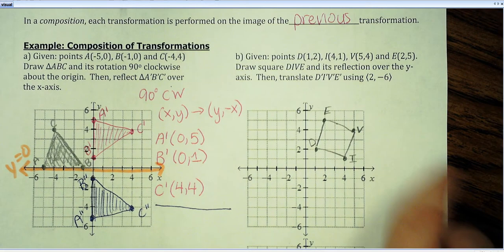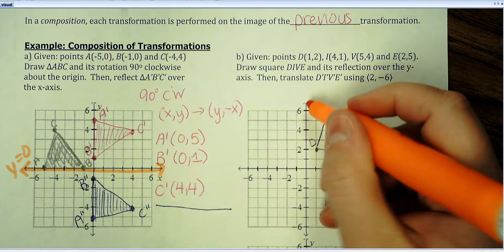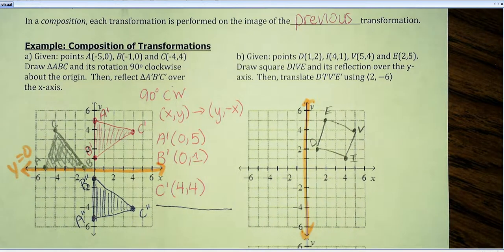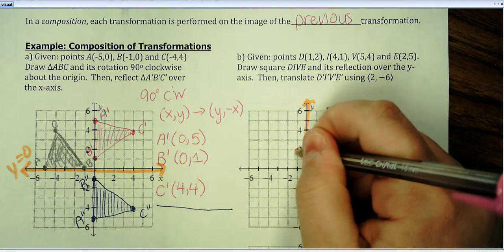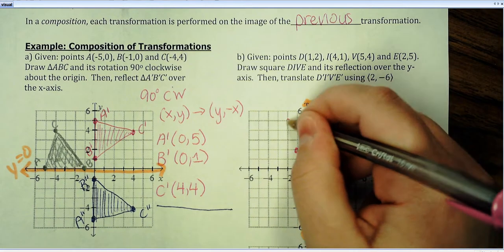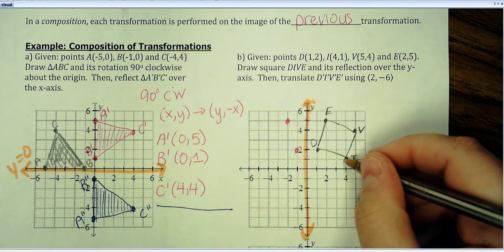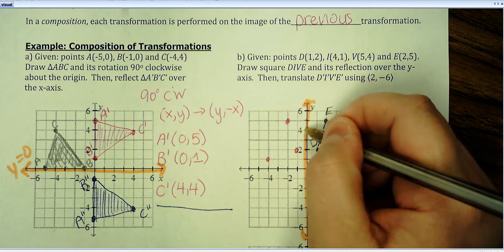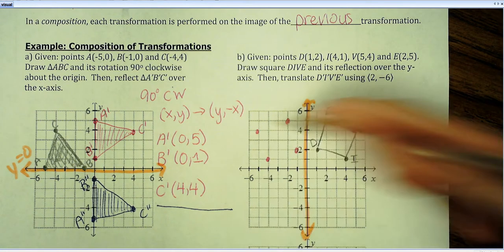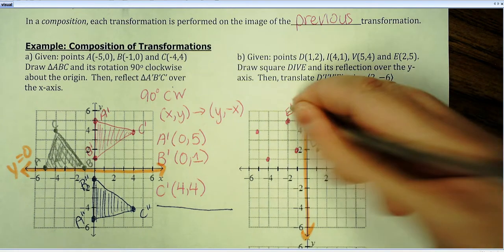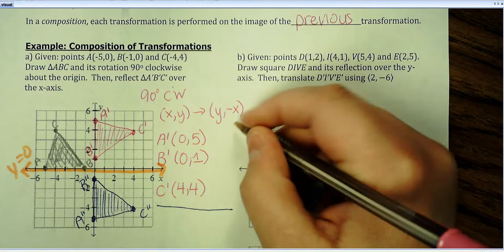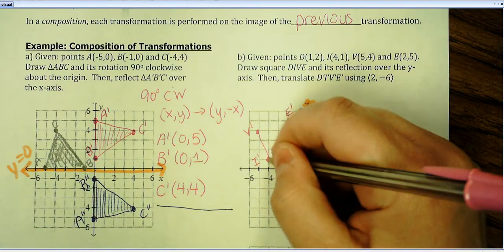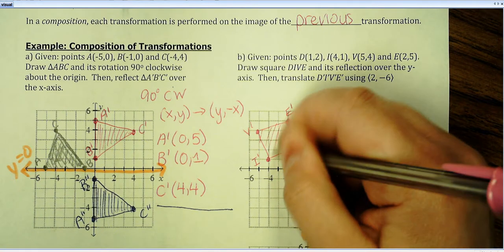Now, the first transformation we're going to perform here is a reflection over the Y axis. And, literally, I just count. So, one spot away, one spot away, two spots away, two spots away. I is four spots away, so four spots away. V, five spots away. So, make sure I'm on the right line, five spots away. So, this is E prime, this is D prime, up here is V prime, and this guy here is I prime. So, there's my square.